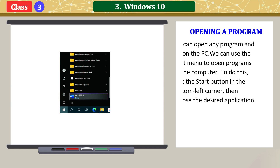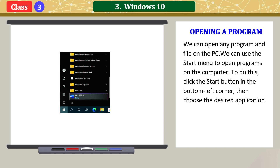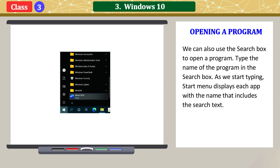Opening a program: We can open any program and file on the PC. We can use the Start menu to open programs on the computer. To do this, click the Start button in the bottom left corner, then choose the desired application. We can also use the search box to open a program. Type the name of the program in the search box. As we start typing, the Start menu displays each app with a name that includes the search text.